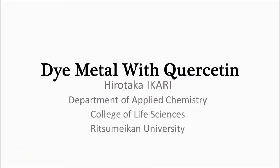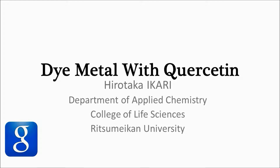That's right! We can dye metal using quercetin, which can be found in an onion. But is it expensive? No, no, no. Quercetin bonds with aluminum. We dye aluminum by using this chelation.